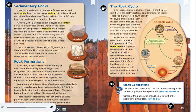The repetition of this process is called the rock cycle. The rock cycle is a pattern, a pattern of change that repeats and continues. It transforms liquid rock into a solid substance, builds cliffs from sand and bones, and returns rock to liquid form.